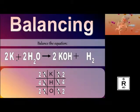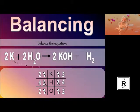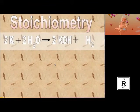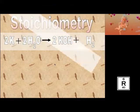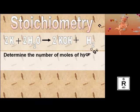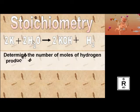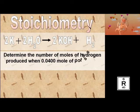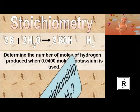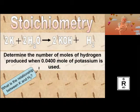So now I have a balanced equation, and this is very important in stoichiometry — we need a balanced equation. Stoichiometry is the relationship, the ratios, of a balanced equation. Let's do some stoichiometry now. What we've done so far was a little bit of review of things you should know already.